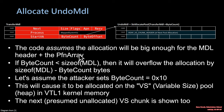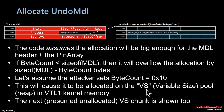The code assumes the allocation will be big enough for an MDL header plus a PFN array. But if the attacker sets the byte count to less than the size of the MDL, there's not even going to be enough size for the header. We've been assuming they set it to a size of 10, and this small size of 10 is going to cause allocation of hex 10 bytes to occur on the VS, or variable size pool — which Microsoft calls the kernel heap pool — in the VTL1 secure kernel.